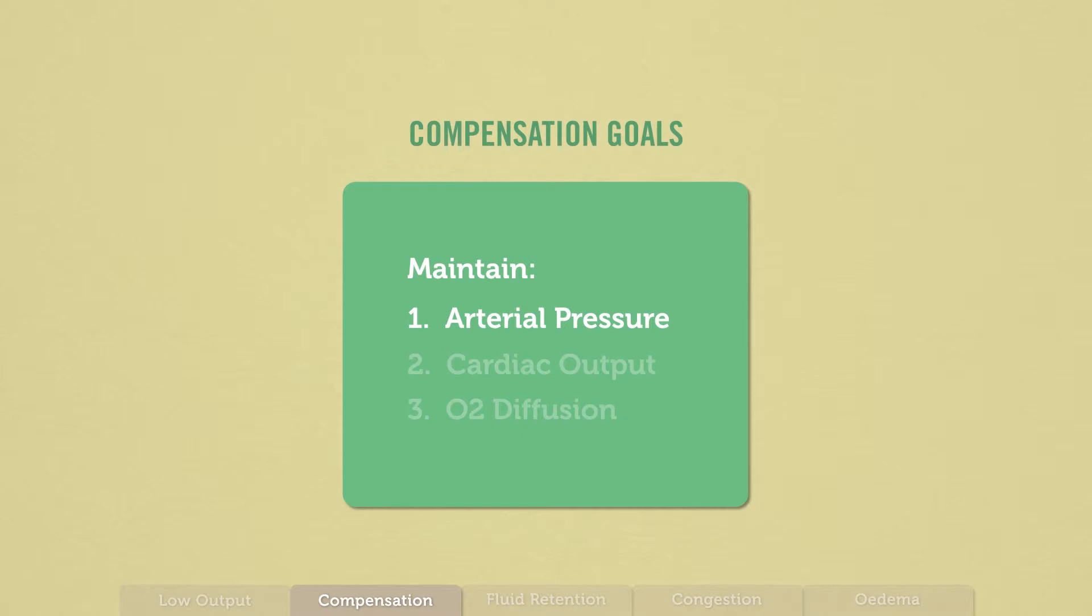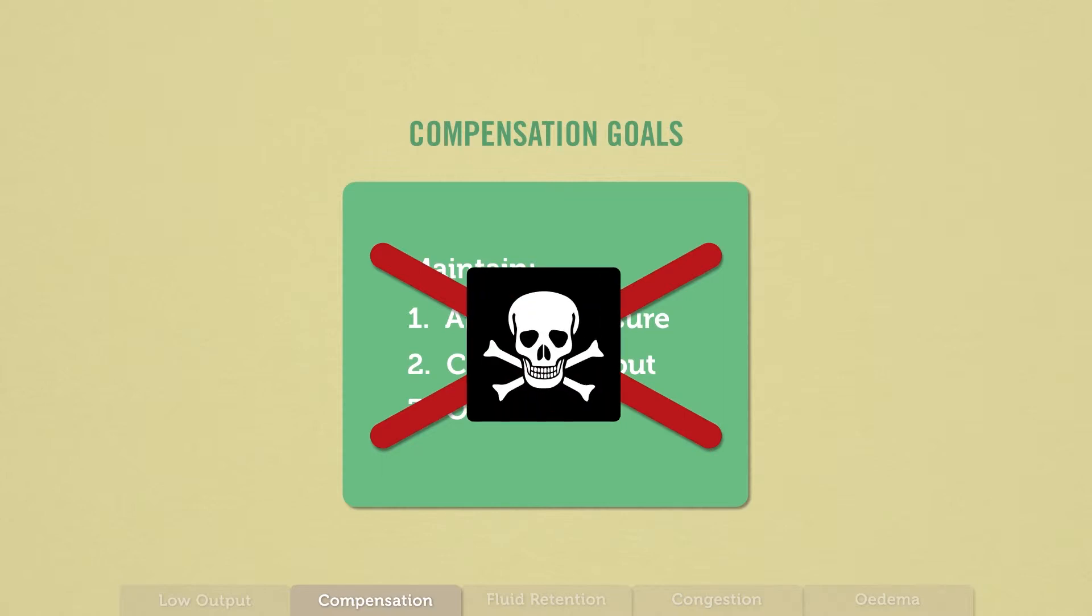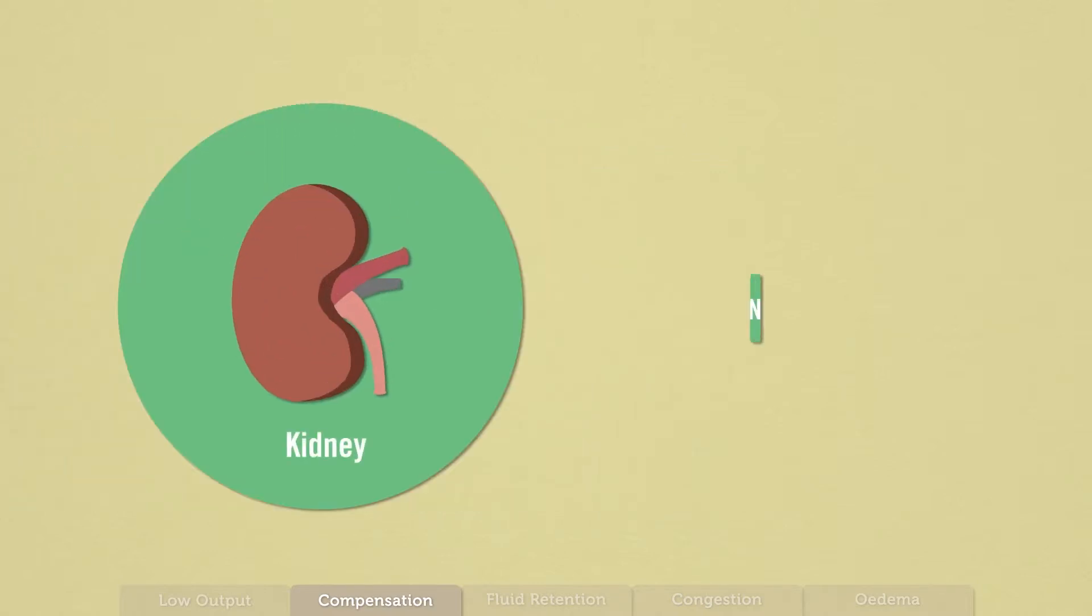Chronic low output heart failure due to hypertension actually is associated with high blood pressure. The two other goals of compensation are to maintain cardiac output and oxygen diffusion across the lungs. A large decrease in any of these leads to low oxygen in the brain, which would lead to loss of consciousness and could ultimately be followed by death. I don't want any of those to happen. Exactly. The kidney prevents these problems by implementing compensation.